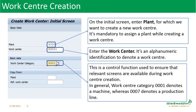Then we have the work center category. Work center category is a control function used to ensure that only relevant screens are available during work center creation. For example, 001 defines the machine category and 007 means a production line. Those things are controlled in the configuration of the work center category. We also have the option to copy details from a plant or reference work center, so that creation of work centers will be made easy.